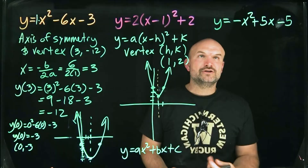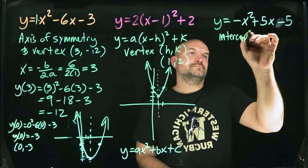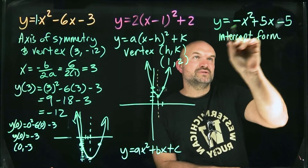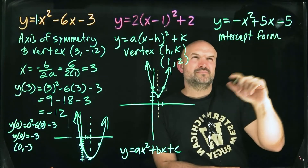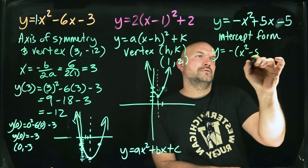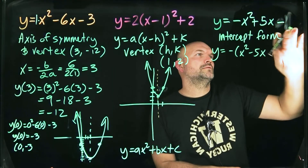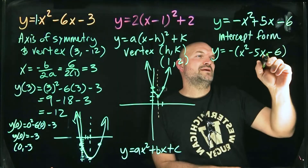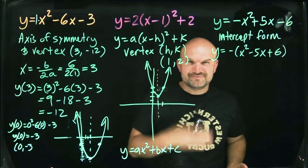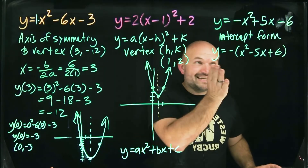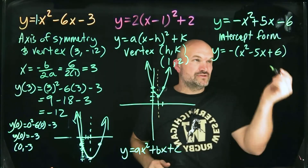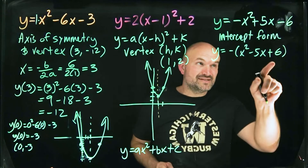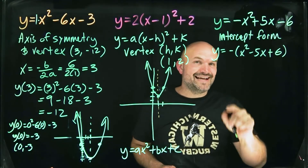Intercept form means we factor the quadratic. First, I want to factor out the negative to make things easier. We need two numbers that multiply to positive six and add to negative five — that's negative three and negative two. So the factored form is negative (x minus 3)(x minus 2).